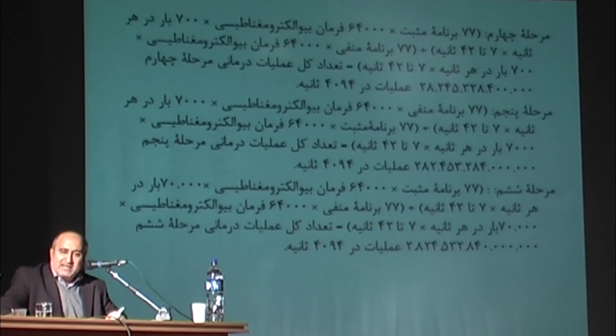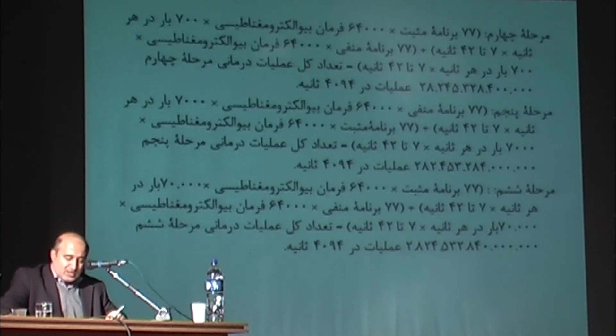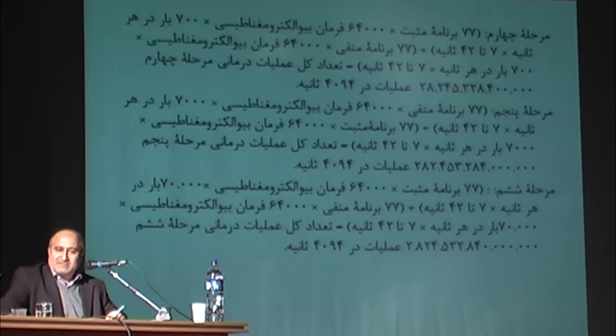Phase 6: 77 positive programs multiplied by 64,000 bioelectromagnetic commands multiplied by 70,000 times per second multiplied by 7 to 42 seconds, plus 77 negative programs multiplied by 64,000 bioelectromagnetic commands multiplied by 70,000 times per second multiplied by 7 to 42 seconds, equals a total number of sixth phase treatment operations of 2,824,532,840,000,000 in 4,094 seconds. The total number of operations in six stages is 3,138,366,773,812,800. The total operation time in six stages is 409.4 minutes.